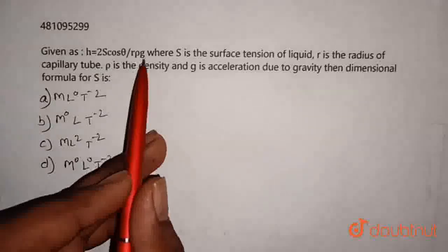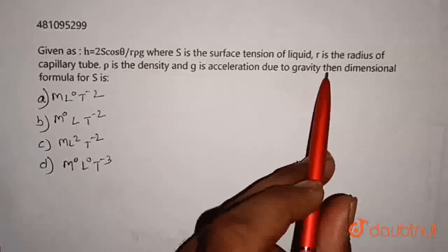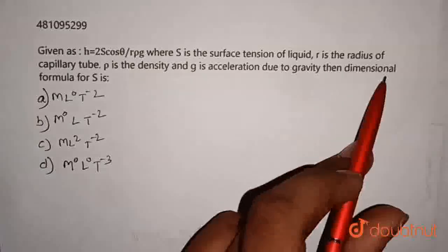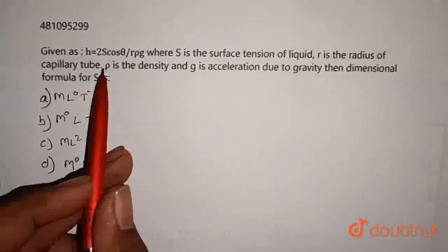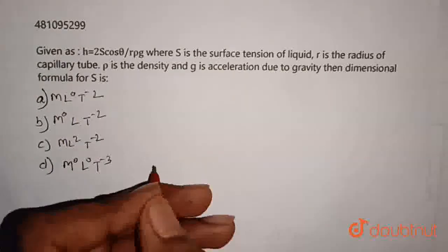Given h is equal to 2s cos θ divided by r rho g, where S is surface tension, r is radius of capillary tube, rho is density, and g is acceleration due to gravity. We need to find the dimensional formula of s.